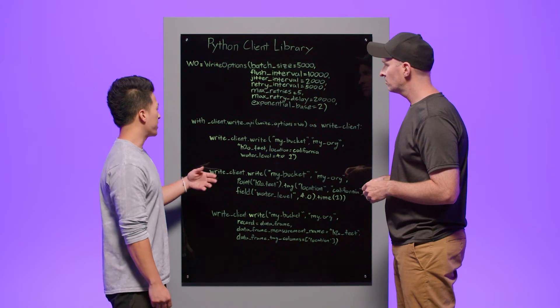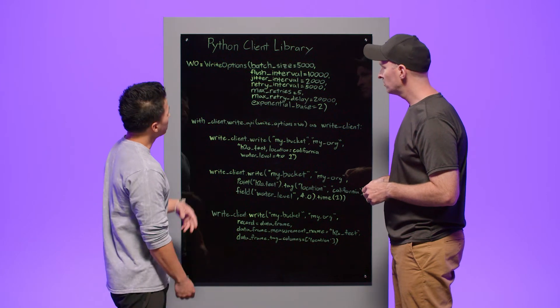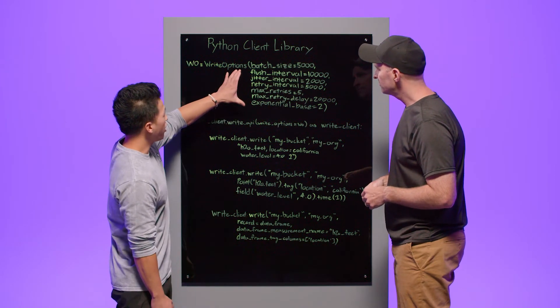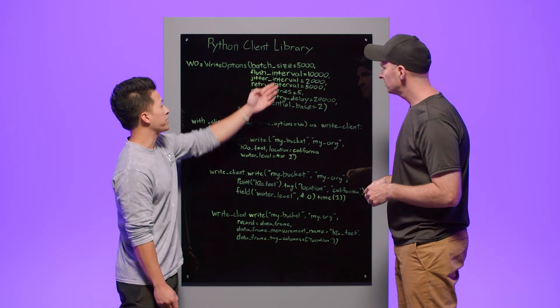Yeah, so today we're going to be speaking about the Python client library, more specifically the write API class. And so the Python client library write API class was designed to let you send your write requests with batching. Additionally, you're able to send these requests in a variety of different data formats of your choice. And so as you can see here, we have the configuration options set up here. You have your batch size, which we've set to 5,000.